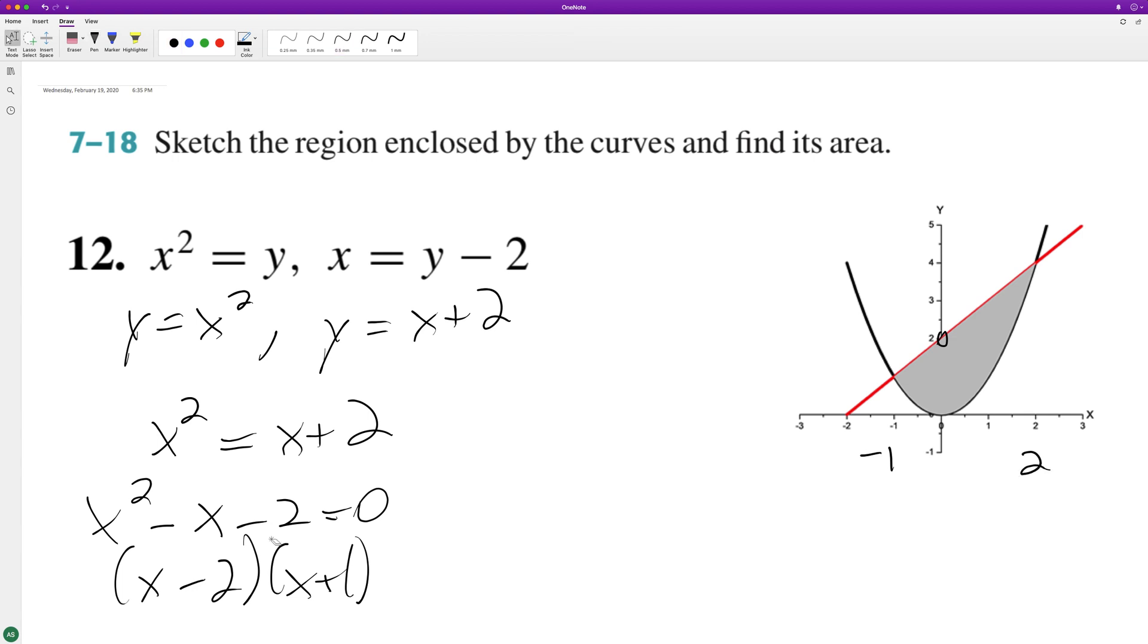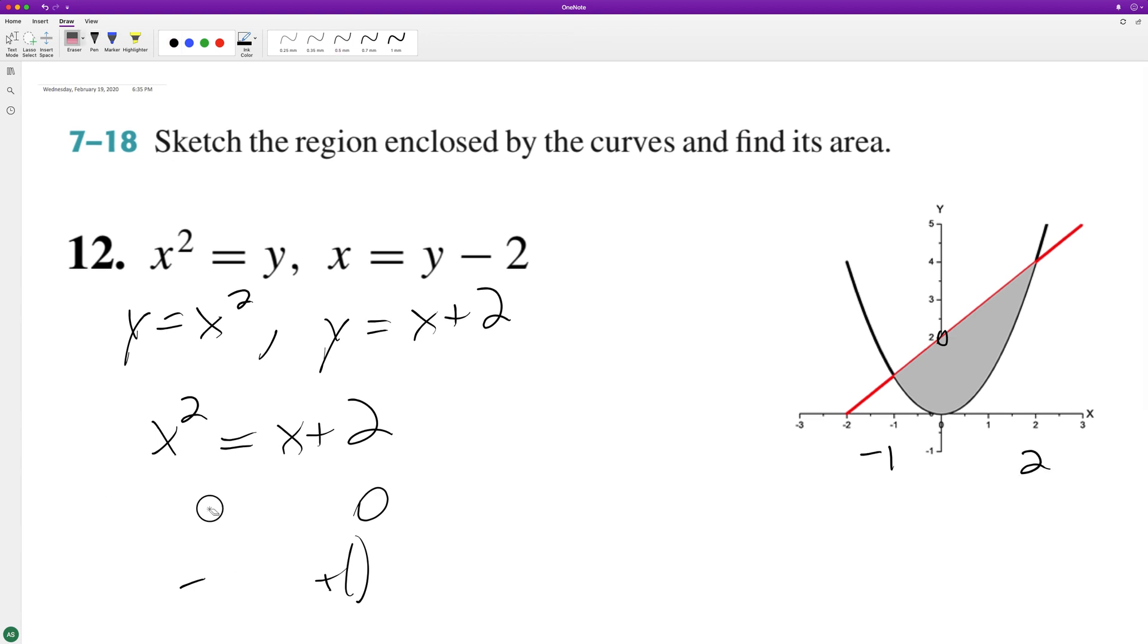So it's going to be the integral from negative 1 to 2 of x plus 2 minus x squared. Go ahead and integrate, so we end up with x squared over 2 plus 2x minus x cubed over 3, going from negative 1 to 2.